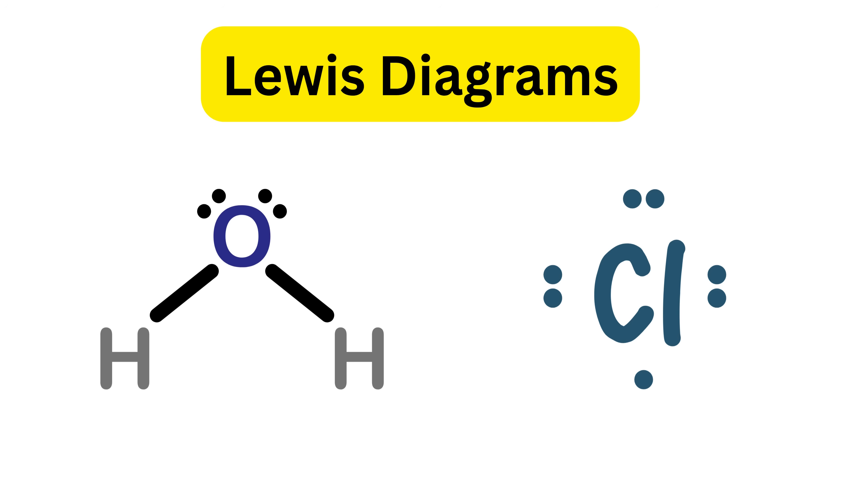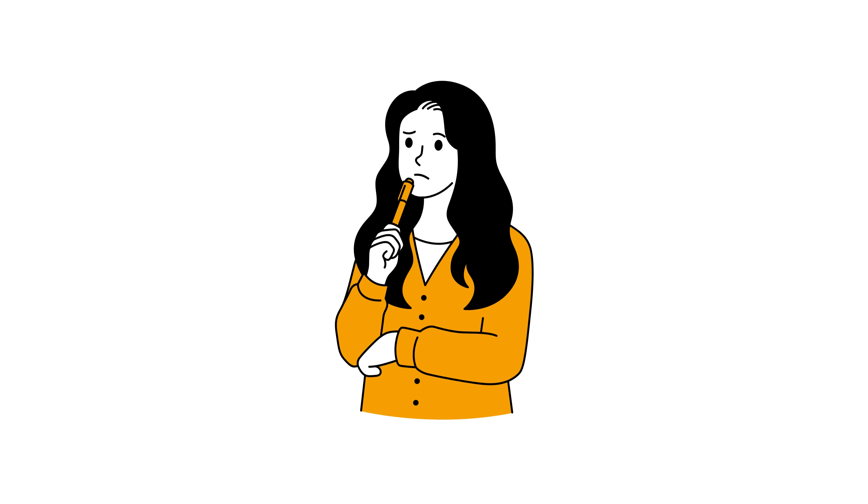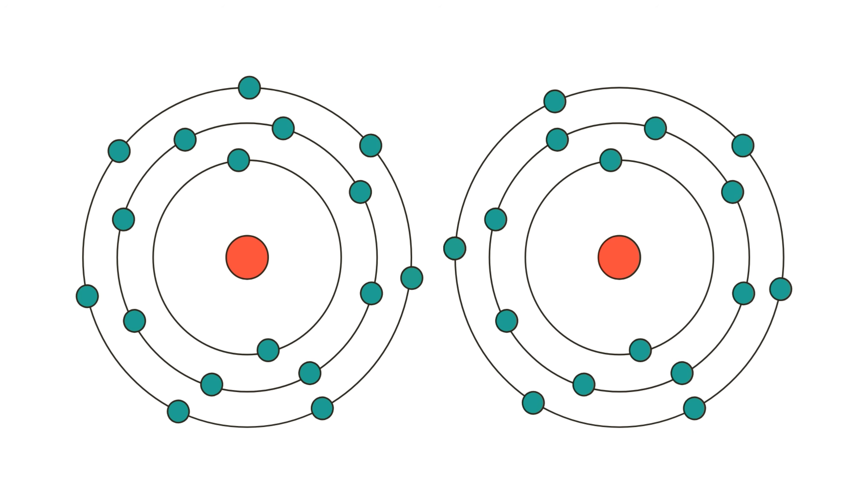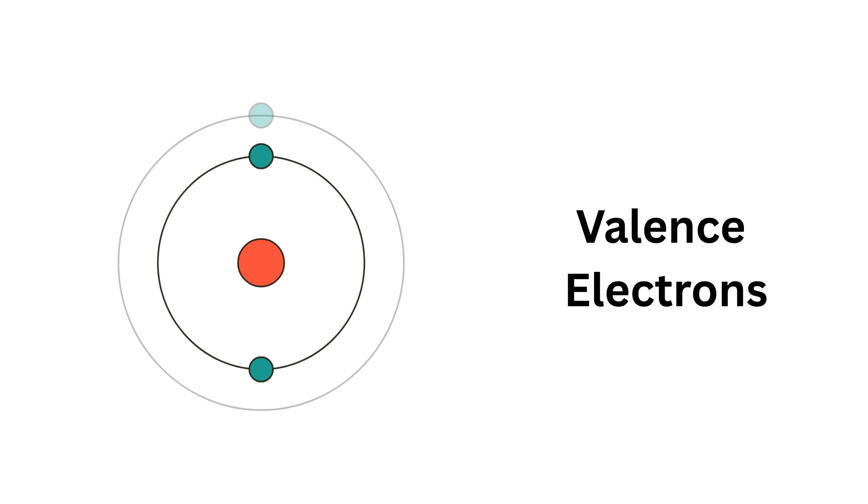Today we are going to dive into one of the most important topics in chemistry: Lewis diagrams. Let's start with a simple question: how do atoms know how to bond with each other? To answer that, we first need to talk about something very important called valence electrons.